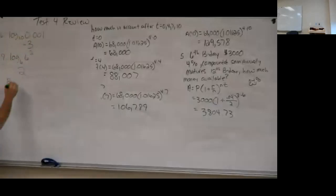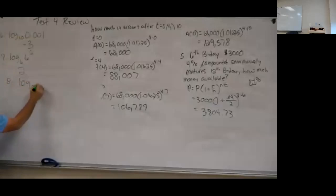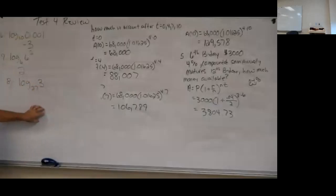Log base 27 of 3. If you get a decimal, turn it back into a fraction. Hit the math button and go down to log base — that's option 7. Hopefully you got 0.33333 repeating, or as a fraction, one-third.